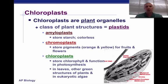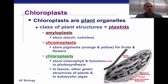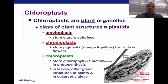When we talk about chloroplasts, chloroplasts are plant organelles. There's a class of plant structures called plastids. There are three types, and chloroplasts belong to one of those three types. There's the amyloplasts, which basically store starch and are colorless. There's the chromoplasts, which store pigments such as yellow and orange — those are the pretty ones you see during the autumn leaf color change, and they're found in fruits and flowers. And then the chloroplasts, which are green because they contain chlorophyll, and they function in photosynthesis.